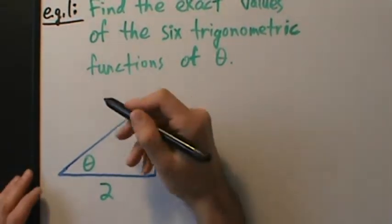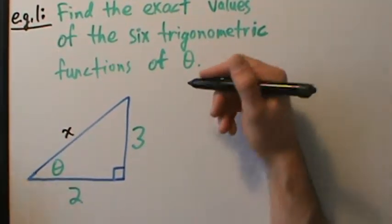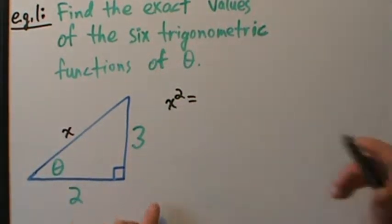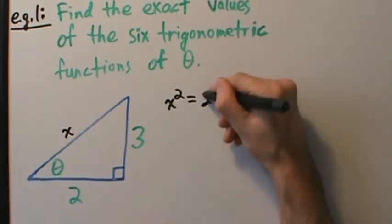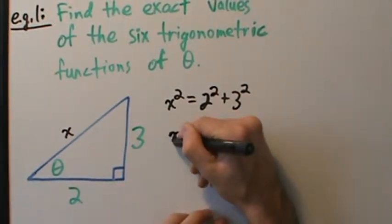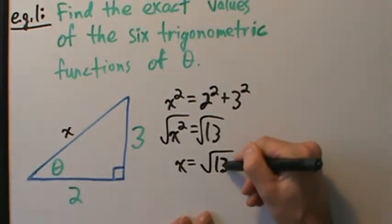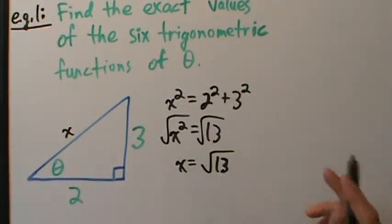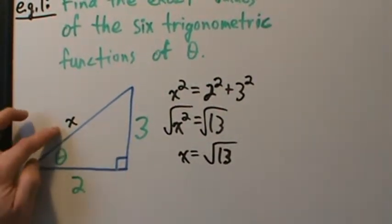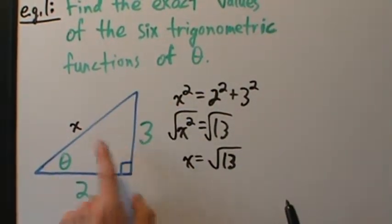To get the hypotenuse, let's call it x. From the Pythagorean theorem, x squared equals 2 squared plus 3 squared. So 2 squared is 4, 3 squared is 9, and 4 plus 9 is 13. So x squared equals 13, and taking the square root of both sides gives x equals the square root of 13. Since x represents the length of a side of a triangle, x must be positive, so we only take the positive square root.